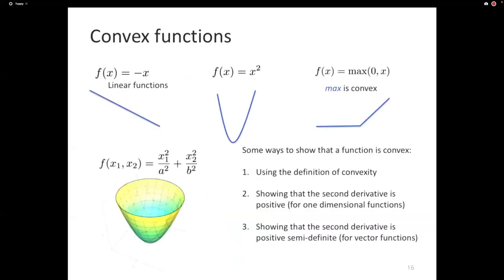Many interesting functions are convex. Linear functions are convex. X squared, quadratic functions are the classic example of a convex function. For our purposes, the function that's interesting is max of 0 comma x. This is something that looks like the hinge loss. That's a convex function. There are many different ways of showing that a function is convex. We can use the definition of convexity. You can show that for functions that operate on one input, you can take the second derivative and show that the second derivative is positive. For functions which have multiple inputs or the inputs are vectors, you need to take the second derivative. The second derivative of such a function tends to be a matrix, and you need to show that that matrix is positive semidefinite.